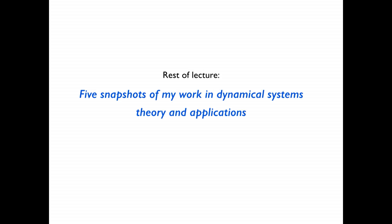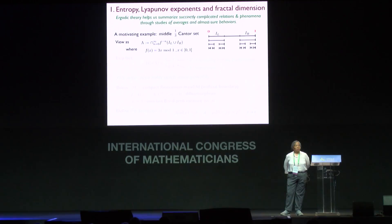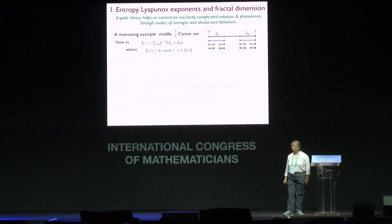Topic number one is about entropy, Lyapunov exponents, and fractal dimension. I chose this topic to illustrate the power of ergodic theory to summarize succinctly relations and phenomena that could otherwise be very complicated. Ergodic theory does this through the study of averages and almost sure behaviors. Let me start with an example that everybody knows and loves: the middle-third Cantor set. The middle-third Cantor set can be seen as an invariant set for the map f(x) = 3x mod 1, x belonging to the unit interval — the set of points whose orbits never enter the middle third of the interval.